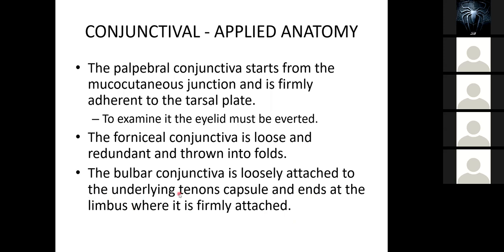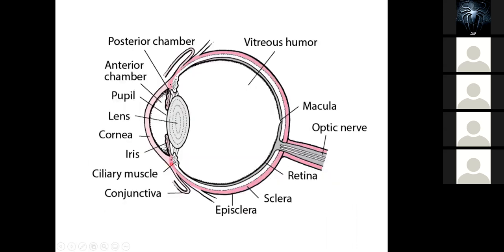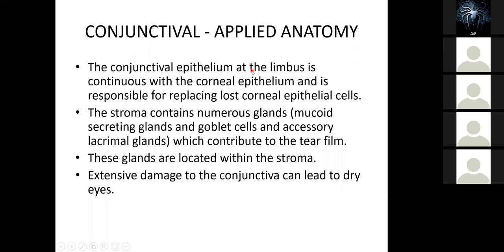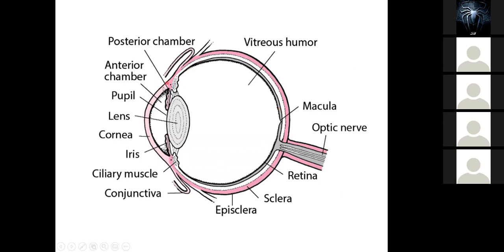The conjunctiva ends at the limbus — the junction between the sclera and the cornea. The conjunctival epithelium at the limbus is continuous with the corneal epithelium and is responsible for replacing lost corneal epithelial cells. So where the bulbar conjunctiva ends at the limbus, the cells there are responsible for replacing the worn-out cells on the cornea.